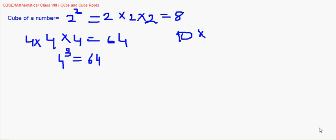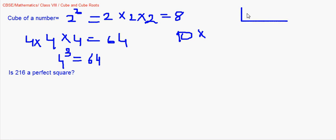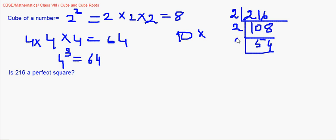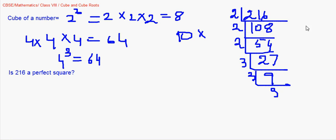Now let's check whether 216 is a perfect cube, and if so, find the number whose cube it is. Just as we did with square roots, we express 216 as a product of its prime factors. Dividing: 216 → 108 → 54 → 27 → 9 → 3, giving us 2 × 2 × 2 × 3 × 3 × 3.